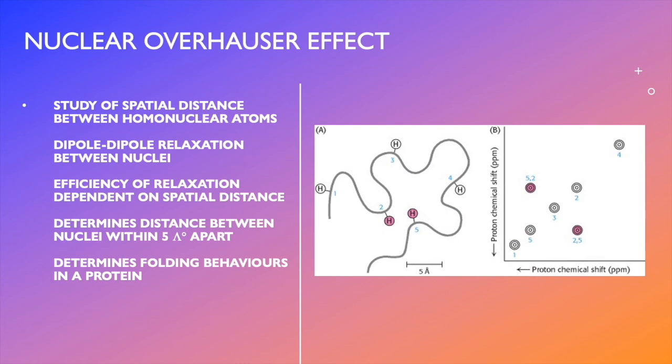The NOESY spectrum contains a diagonal which corresponds to the one-dimensional peaks that would be seen in a regular proton spectrum of the molecule in question. However, it's the peaks that occur off the diagonal, known as cross peaks, which provide information about the spatial distance between nuclei, which can be seen here. The larger the spots in the spectrum, the closer in space they are.